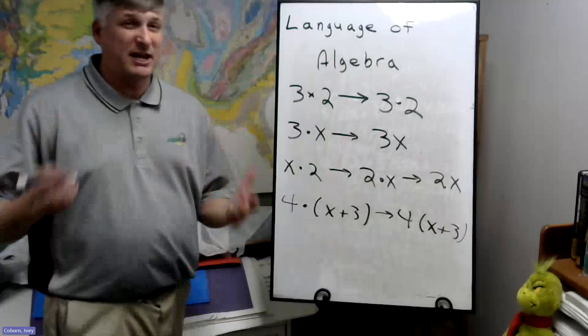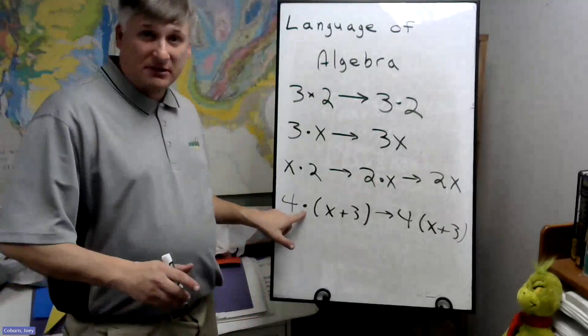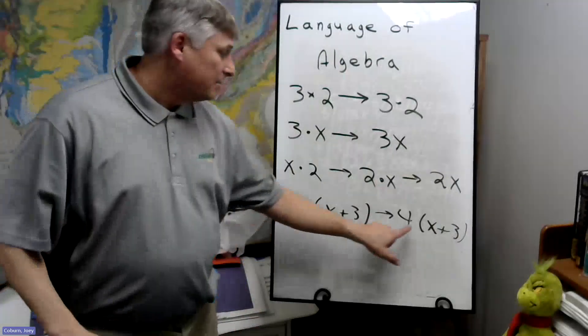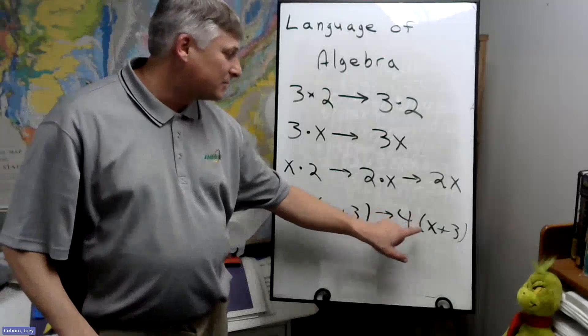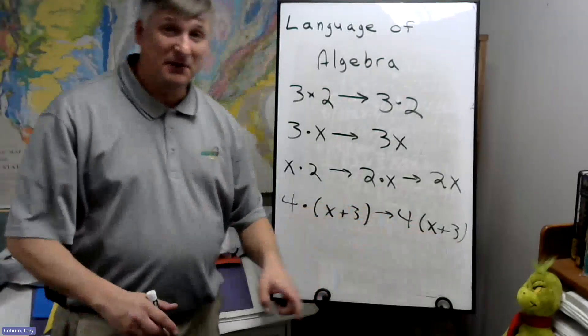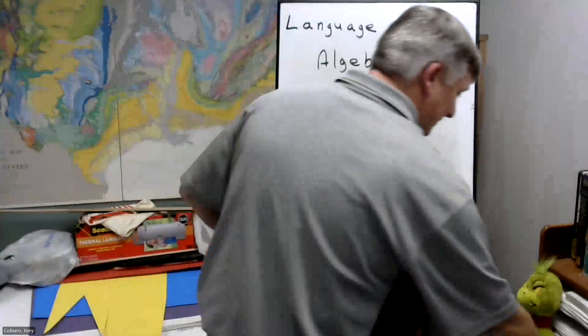I shouldn't say we remove the multiplication. We hide the sign. So this isn't appearing here, but it's really implied. There's an invisible dot there that says this is 4 times what's in parentheses here. We'll talk about how to deal with this later.